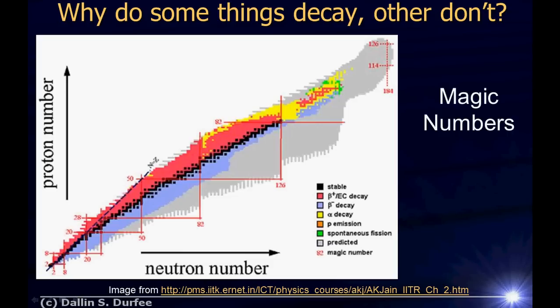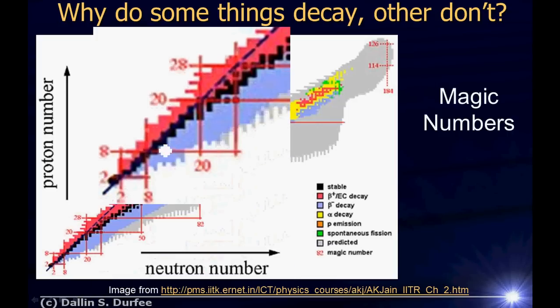If you zoom in, you'll notice certain numbers called magic numbers. For example, for proton or neutron number 20, there are a whole bunch of stable isotopes. That has to do with closing shells — just like in chemistry, when you close a shell certain numbers of electrons result in more tightly bound atoms. The same thing happens with nuclei: there are certain magic numbers that close shells, which result in more tightly bound nuclei. So for certain numbers, you end up with extra stable nuclei having that number of protons or neutrons.